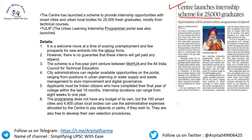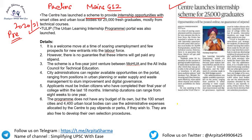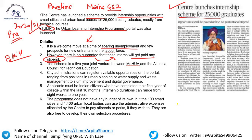Next news — Centre launches internship scheme for 25,000 graduates, important for Prelims and Mains GS Paper 2. The scheme is called TULIP — The Urban Learning Internship Program. It is a five-year joint venture between the Ministry of Housing and Urban Affairs and the All India Council for Technical Education. City administrations can register available opportunities on the portal. The program does not have its own budget, but 100 Smart Cities and 4,400 Urban Local Bodies can use administrative expense allocations to pay stipends.